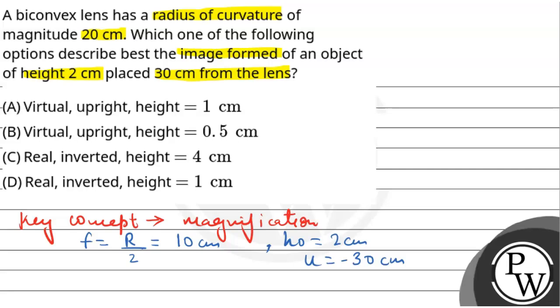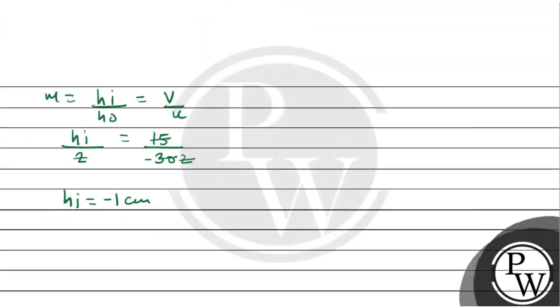So this means our image is inverted. The image is inverted and the height is 1 centimeter. So I hope you have understood this question. Option D is correct.